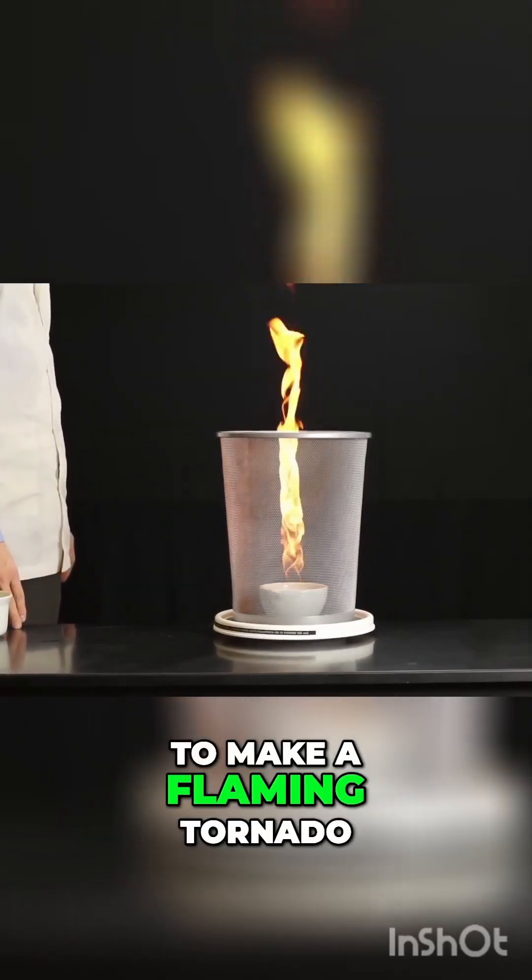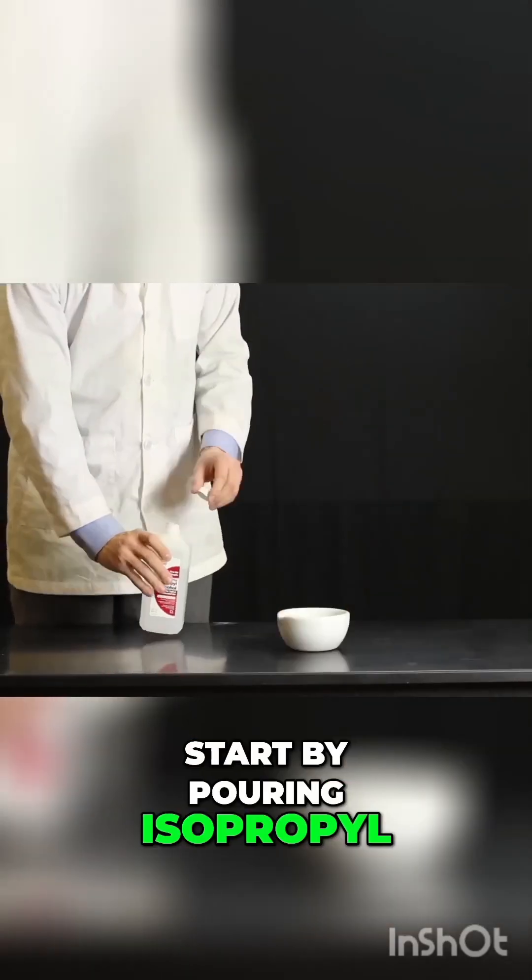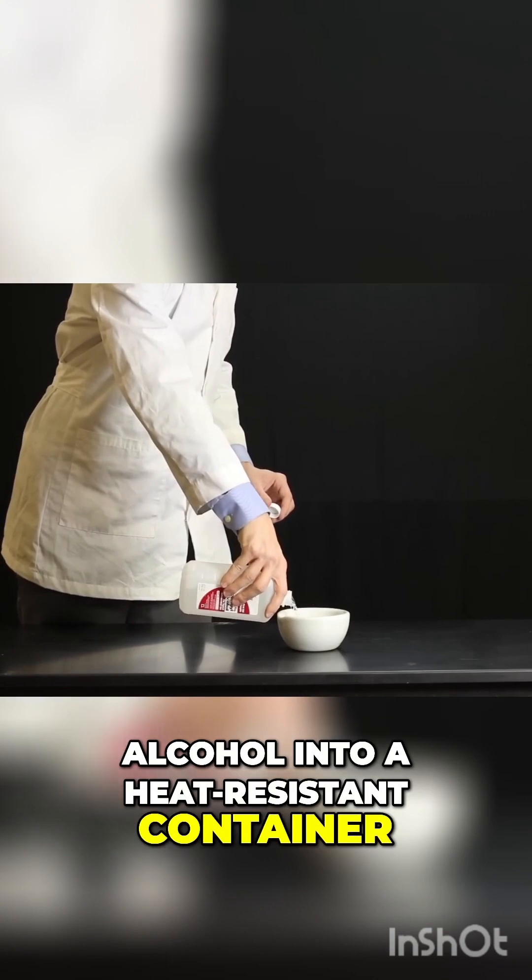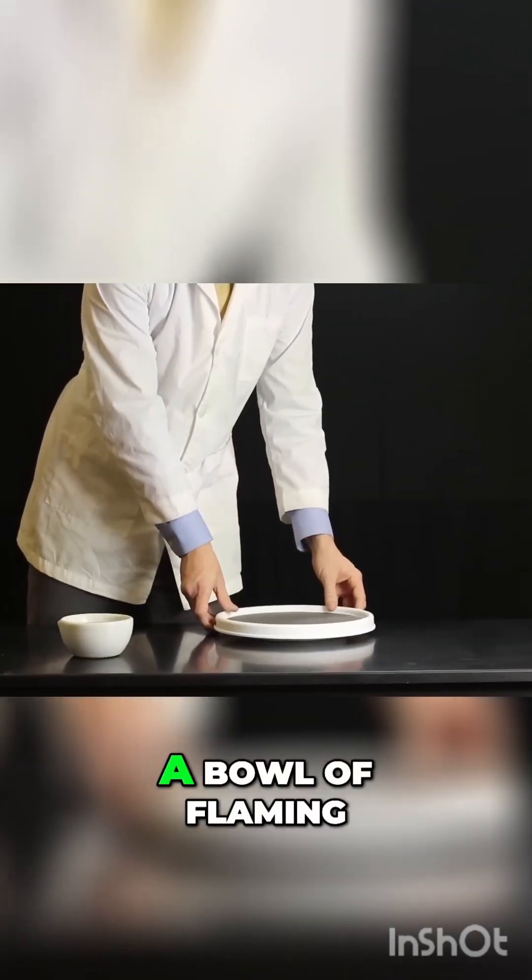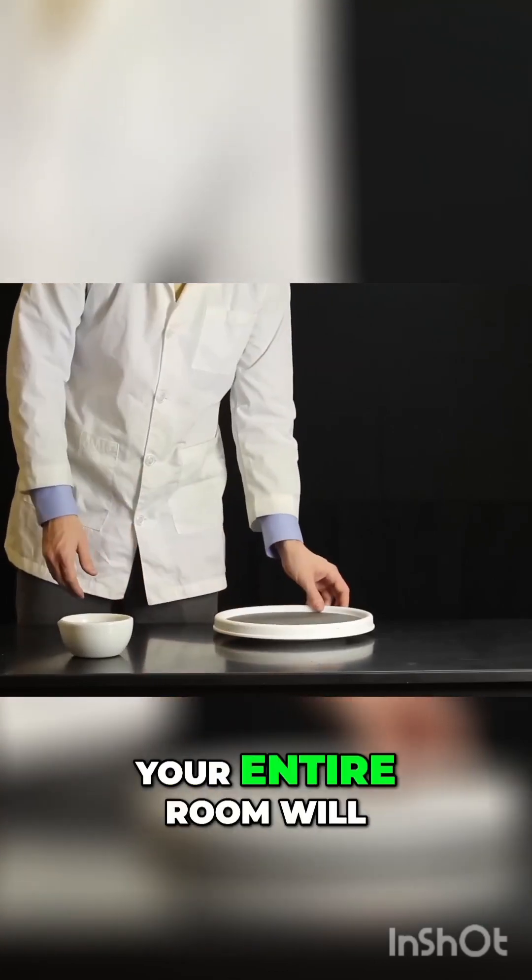Weirded Science Guy here, and today we're going to make a flaming tornado. Start by pouring isopropyl alcohol into a heat-resistant container. It's a good idea to use a sponge or some other absorbent material in the bowl of isopropyl alcohol, because if you spill a bowl of flaming isopropyl alcohol, your entire room will catch on fire.